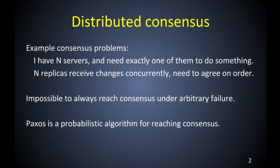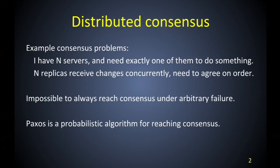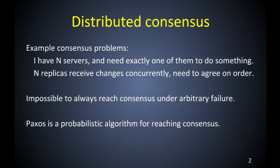The problem that Paxos addresses is that of distributed consensus. Let's say you have a number of servers — 3, 10, 100 — and you need exactly one of them to do something. They all need to agree who gets to do the job, who gets to be the leader. Or you have a number of replicas of some data, and there are updates to that data, and they all need to agree on the order in which these updates are applied. Turns out this is an impossible problem if there are failures, which there are in distributed systems. You cannot write an algorithm that always reaches consensus. So Paxos is a probabilistic algorithm for achieving consensus.